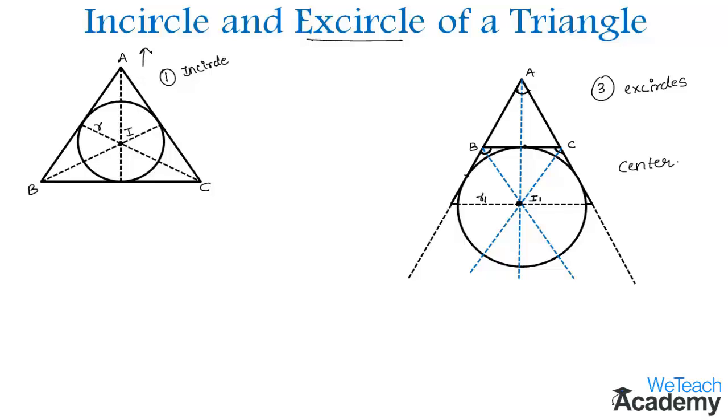Now let us discuss a few formulas on both these concepts. Here, ID is perpendicular to BC, and similarly IE is perpendicular to CA and IF is perpendicular to AB.